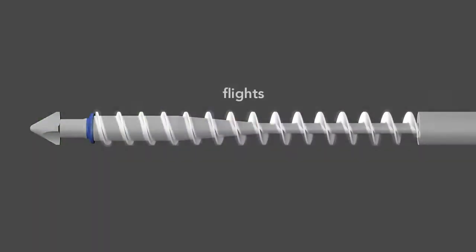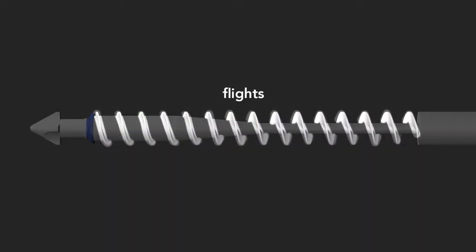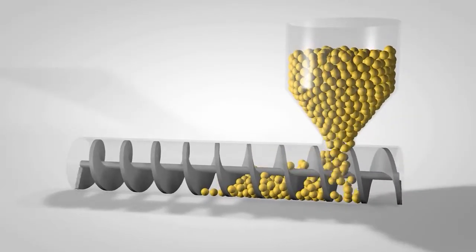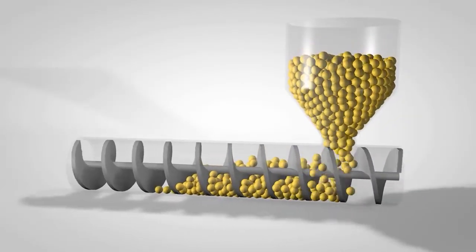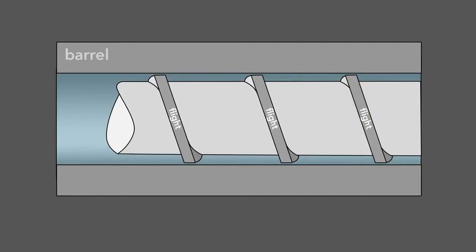Second, the screw has flights that wrap around the shaft. As the screw rotates, the flights transport the raw material forward through the barrel. The flights also serve to mix the plastic. The screw action agitates the melting pellets within the flights to create a uniform mixture.